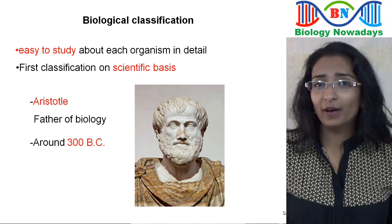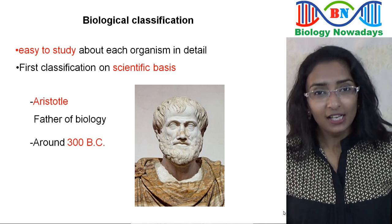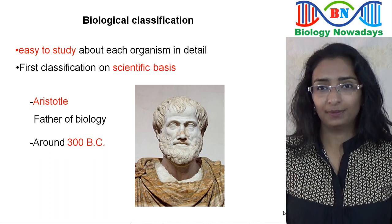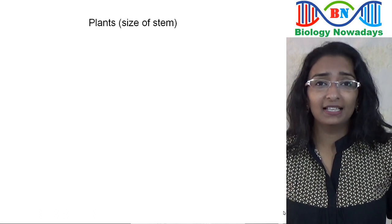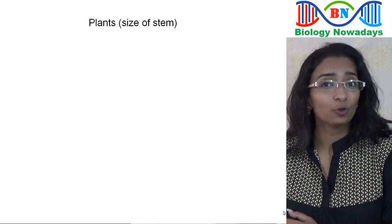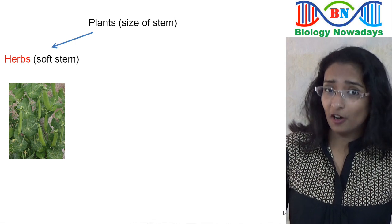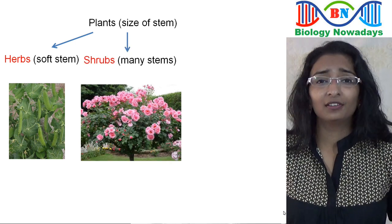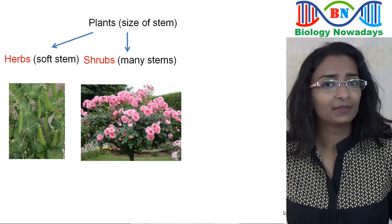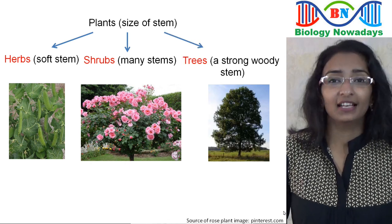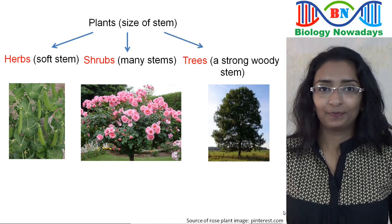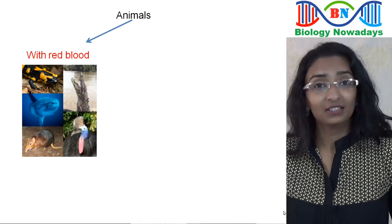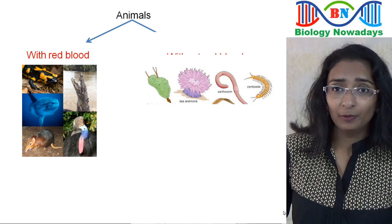As there were no microscopes during those days, he grouped organisms on the basis of simple morphological features. He divided plants on the basis of the size of stem into herbs that have a soft stem, shrubs having many stems that are a little stronger than those of herbs, and finally into trees that have a strong woody stem.